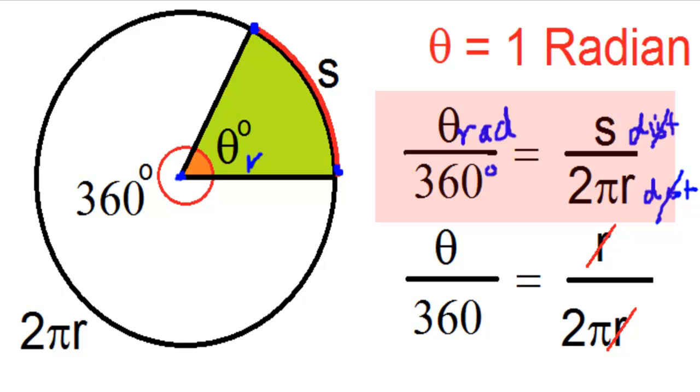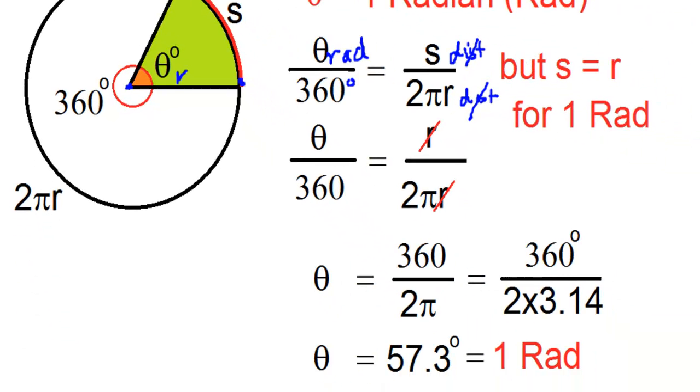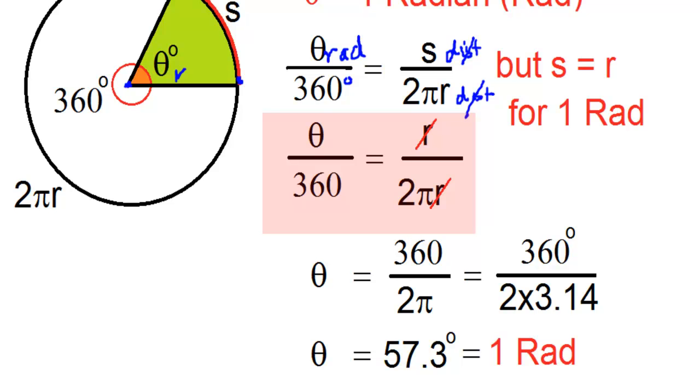Substitute r for s, since they have equal lengths, and r here and r here would cancel out. And that would get you theta equals 360 divided by 2π, which is 57.3 degrees. And that's one radian.